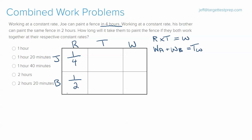When working together, the time is the same for both people regardless of who's faster or slower. Since we don't know the time, we label it x for both. Rate times time equals work, so multiplying across gives us x over four for Joe's work and x over two for the brother's work. Then we write x/4 plus x/2 equals one.